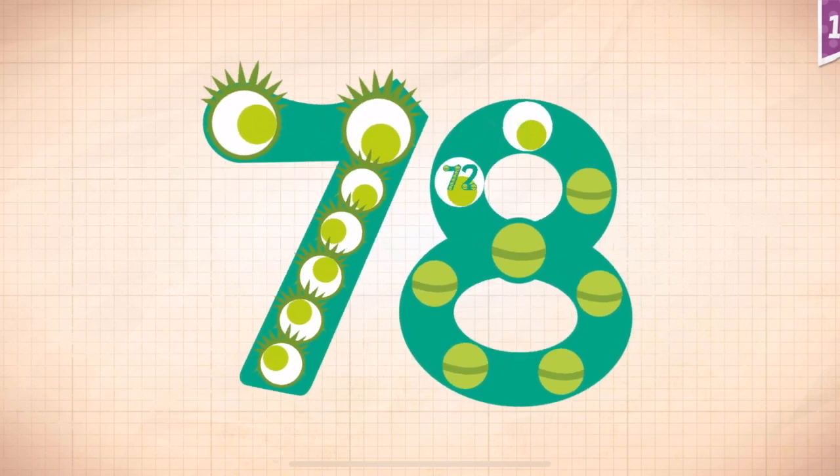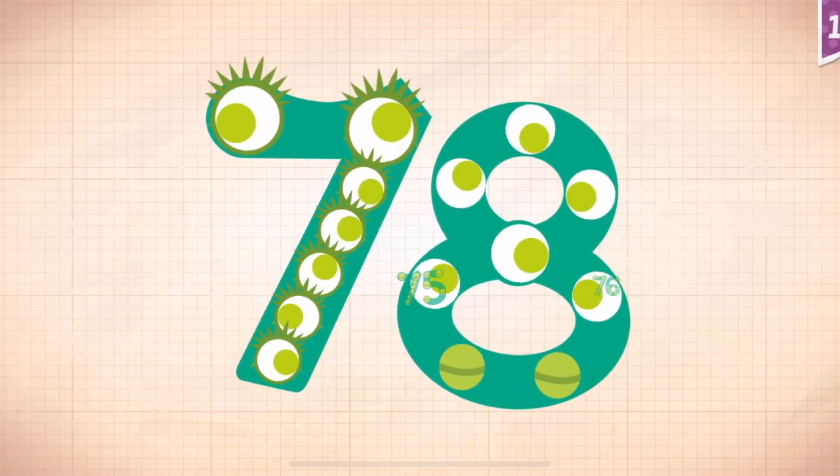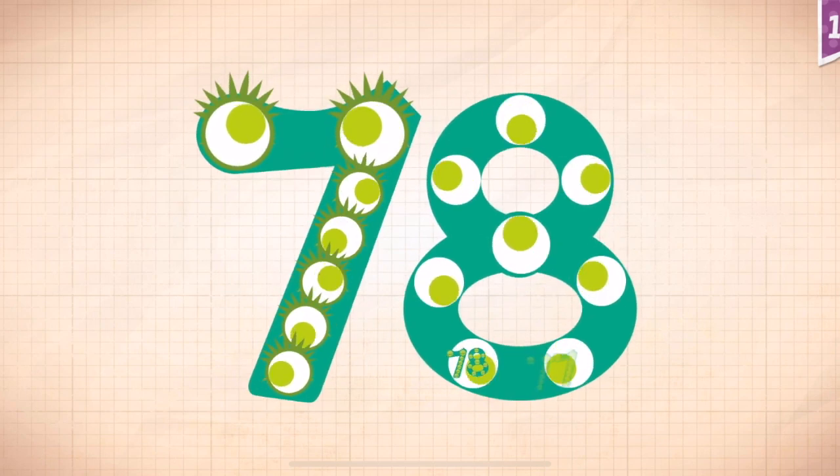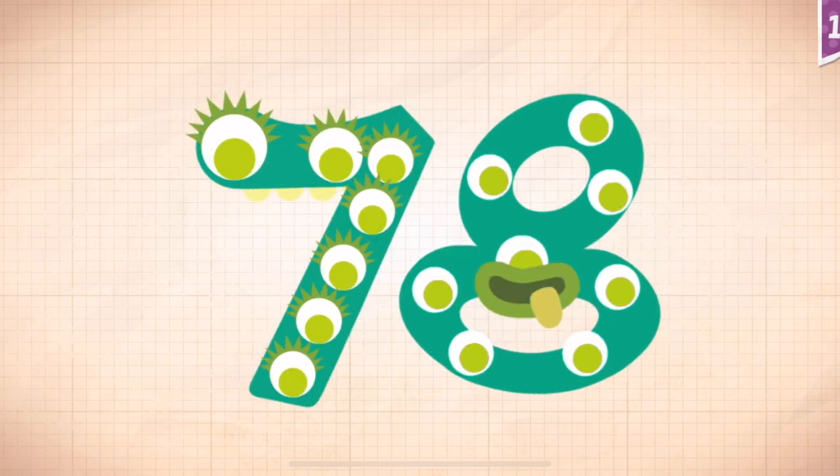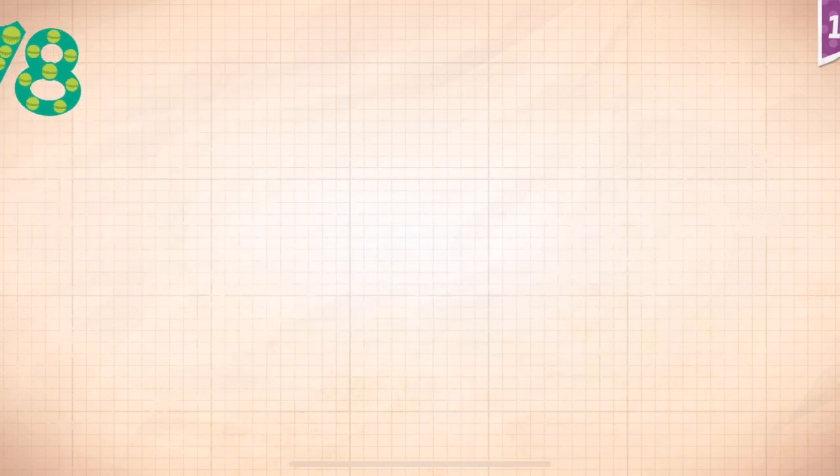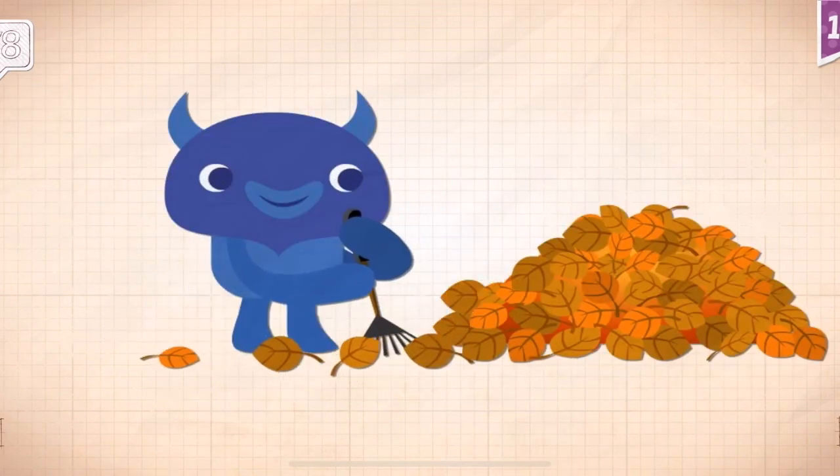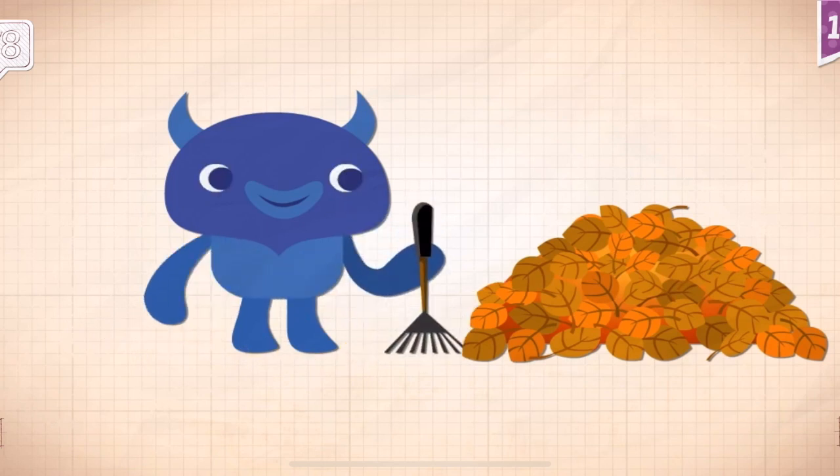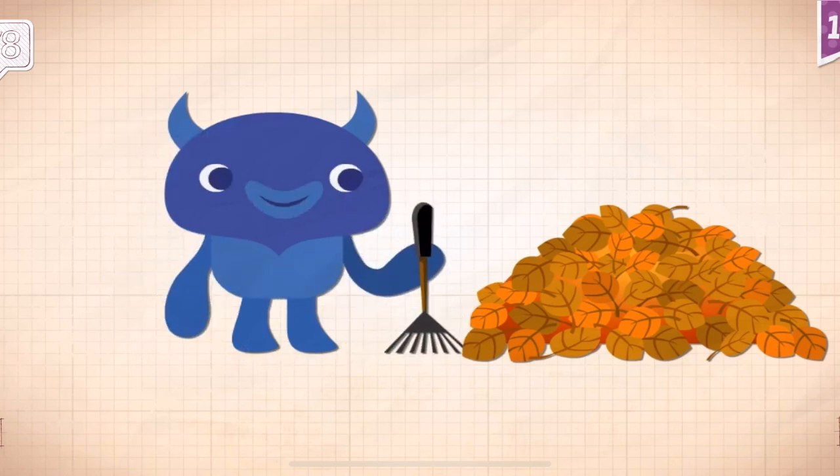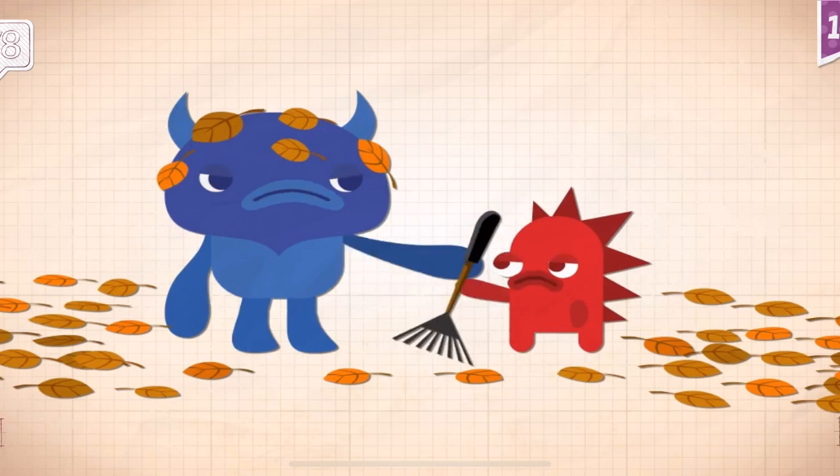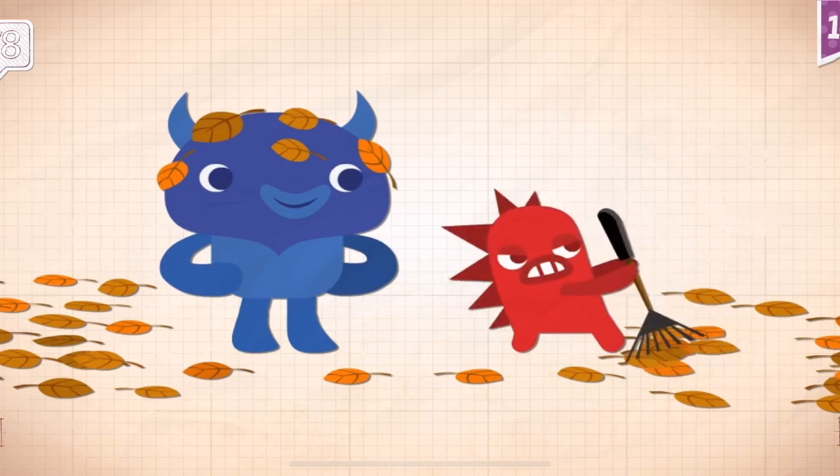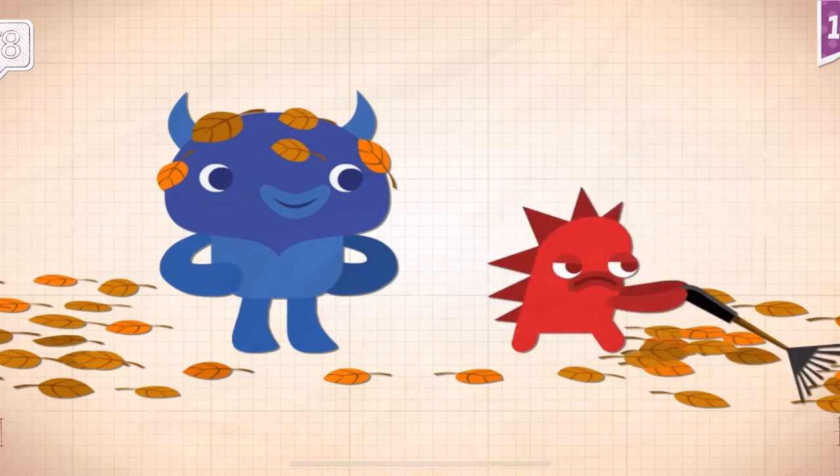60, 70, 71, 72, 73, 75, 76, 78. It was Rocky's turn to rake the 78 leaves back into a pile.